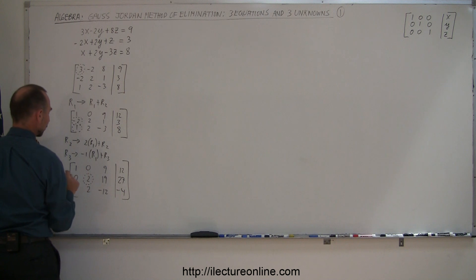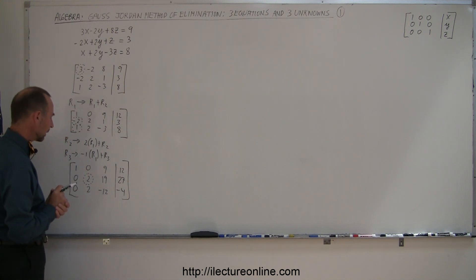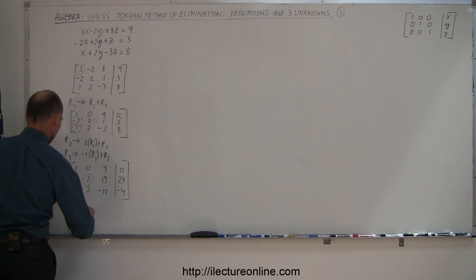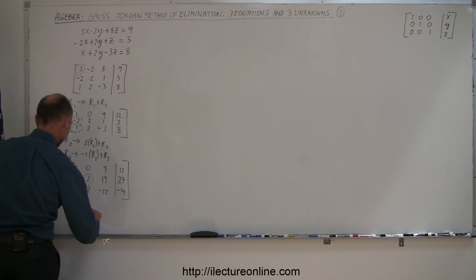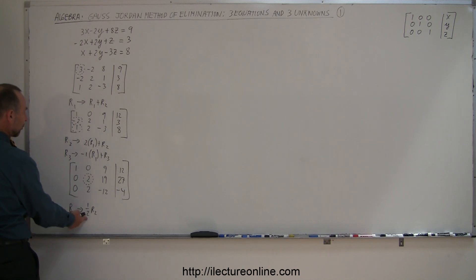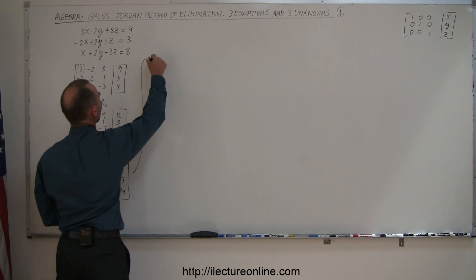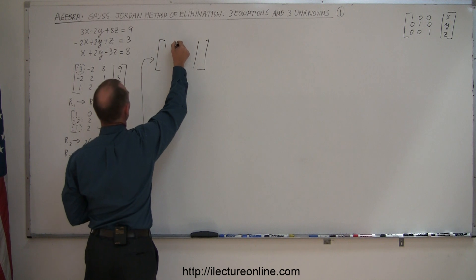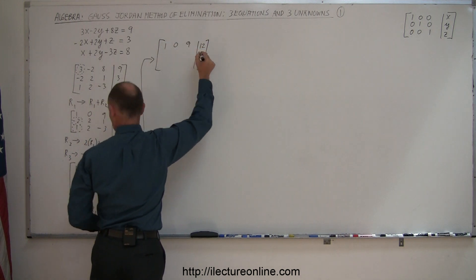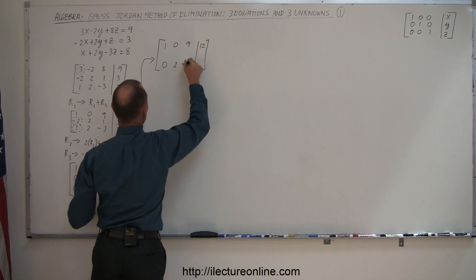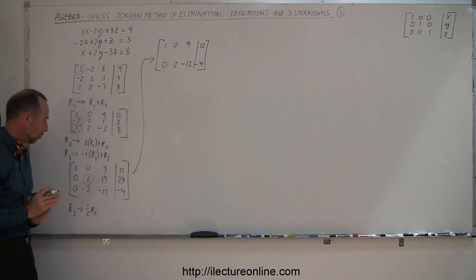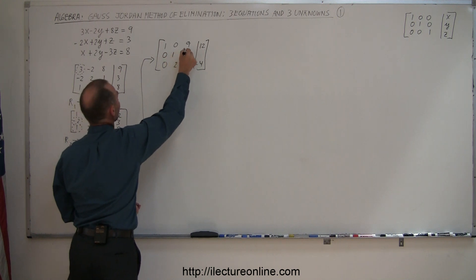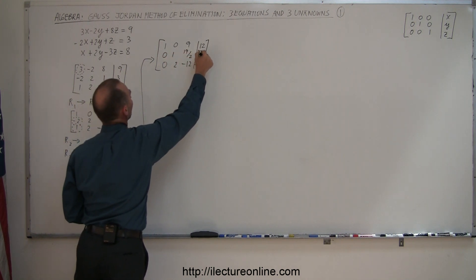Next, I want to turn the row two diagonal entry into a one. The way to do that is to take the whole row and divide it by two. So row two is replaced by one half of row two. Row one and row three are not changing. Row two becomes: zero, one, nineteen over two, and twenty-seven over two.